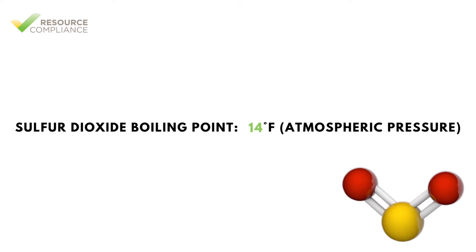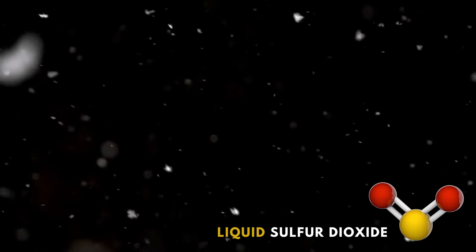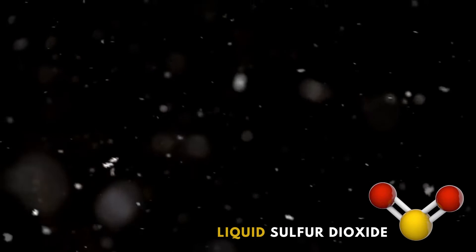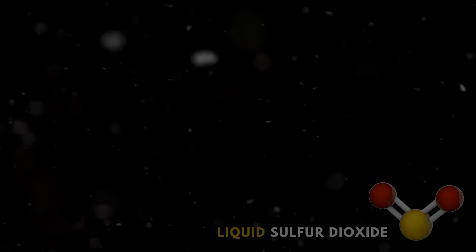Sulfur dioxide boils at 14 degrees Fahrenheit at normal atmospheric pressure. This means that in most conditions, sulfur dioxide will not remain a liquid but will be in a gaseous state. However, in cold winter conditions, sulfur dioxide will remain in a liquid state.